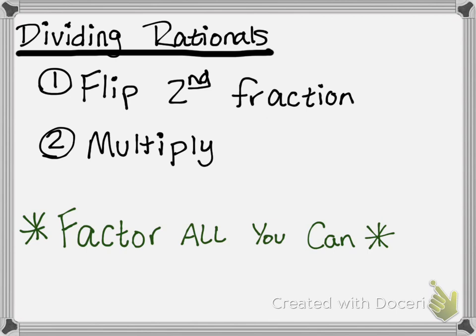Down there in green I wrote 'factor all you can.' Just like when we multiplied, we want to factor everything so we can cancel something out. We cannot cancel something out unless it's in factored form and the factors are identical. If they're kind of close, we don't cancel them — they have to be exactly the same.